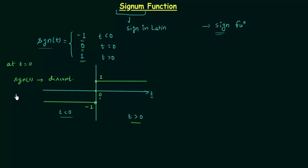And because of this reason, we cannot differentiate signum function at t equal to 0. Now we will see a few examples based on signum function.